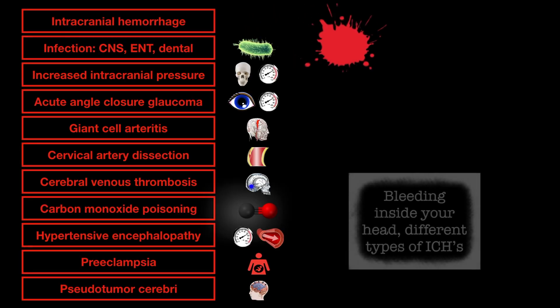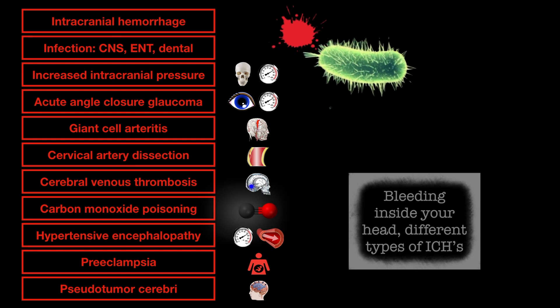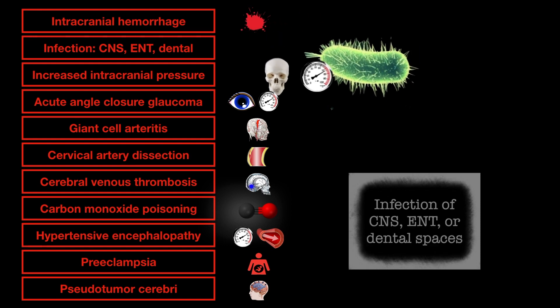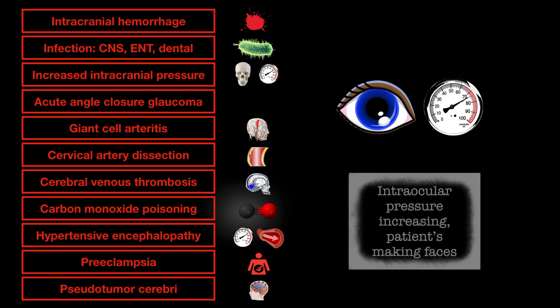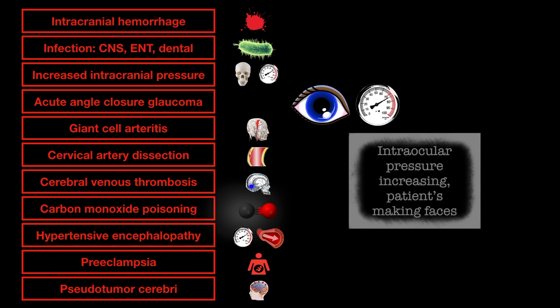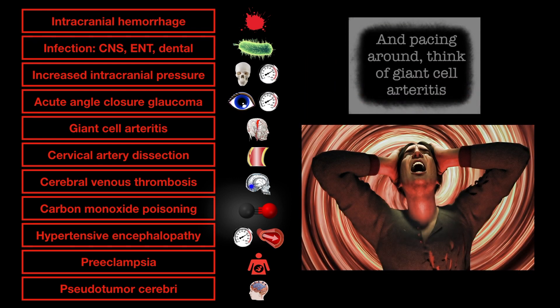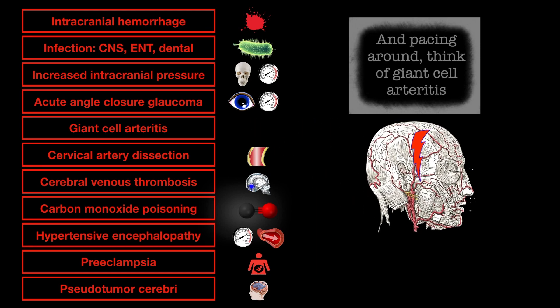Now one more time — bleeding inside your head, different types of ICH. Infection is CNS, ENT, or dental spaces. Intracranial pressure pushing parts in the wrong places. Intraocular pressure increasing, patients making faces and pacing around — giant cell arteritis...